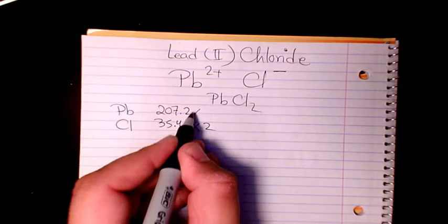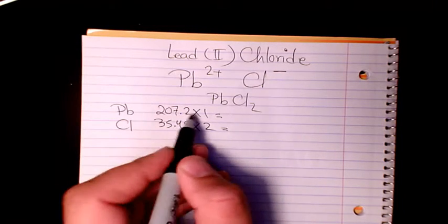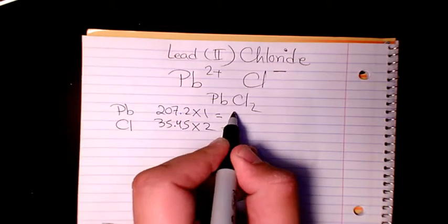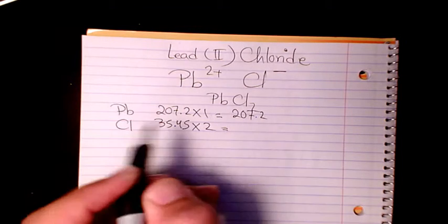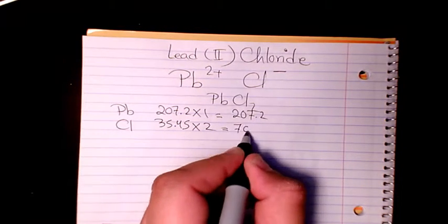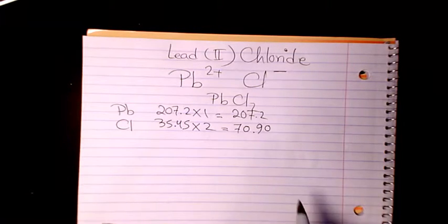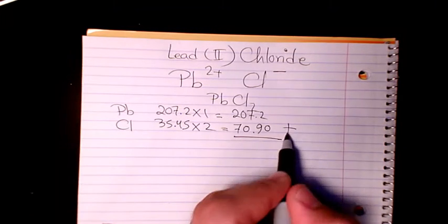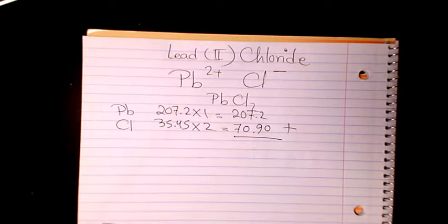So it's going to be 1 times 207.2, which is 207.2, and chlorine is going to be 70.90. So then you need to add these two, which is going to be 207.2 plus 70.9.